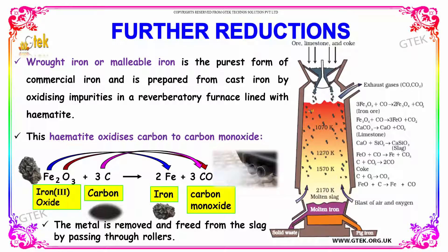This hematite lining oxidizes the carbon to carbon monoxide. You can see that Fe2O3 plus carbon gives iron and carbon monoxide. The metal is then removed and freed from the slag by passing through rollers.